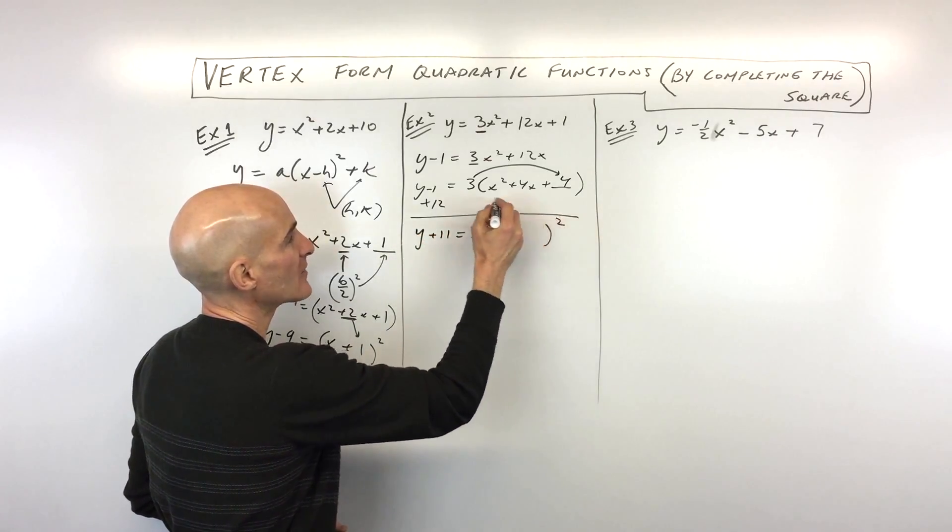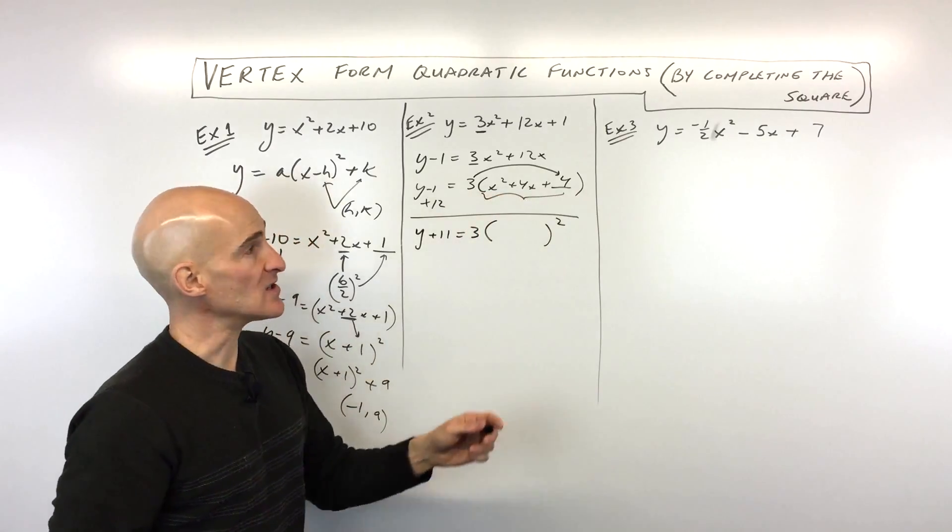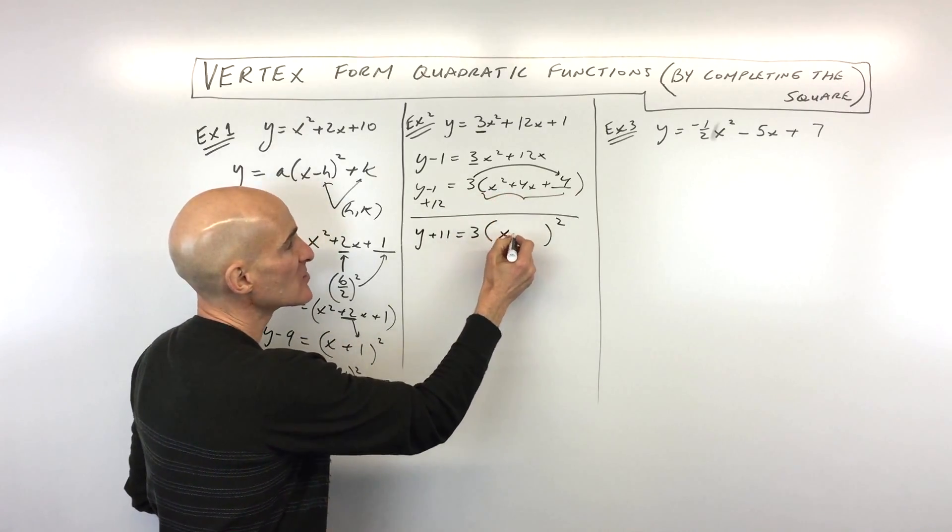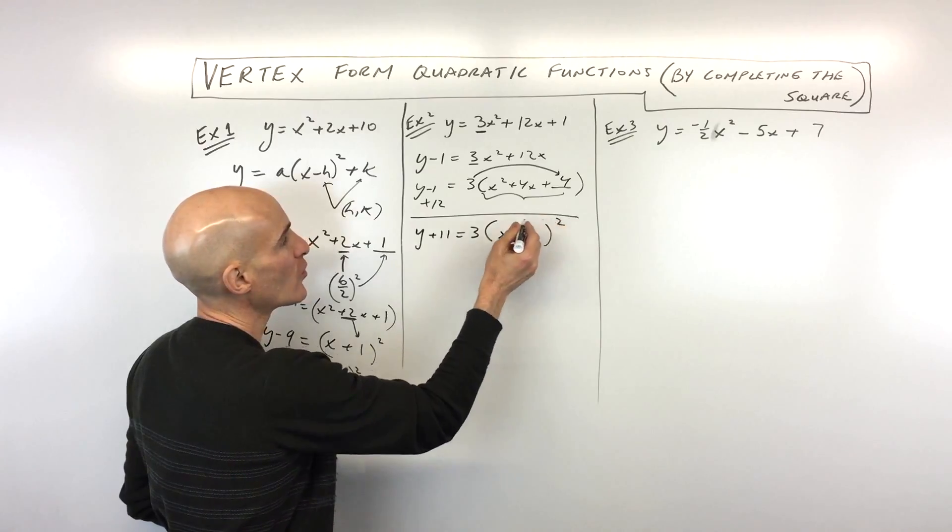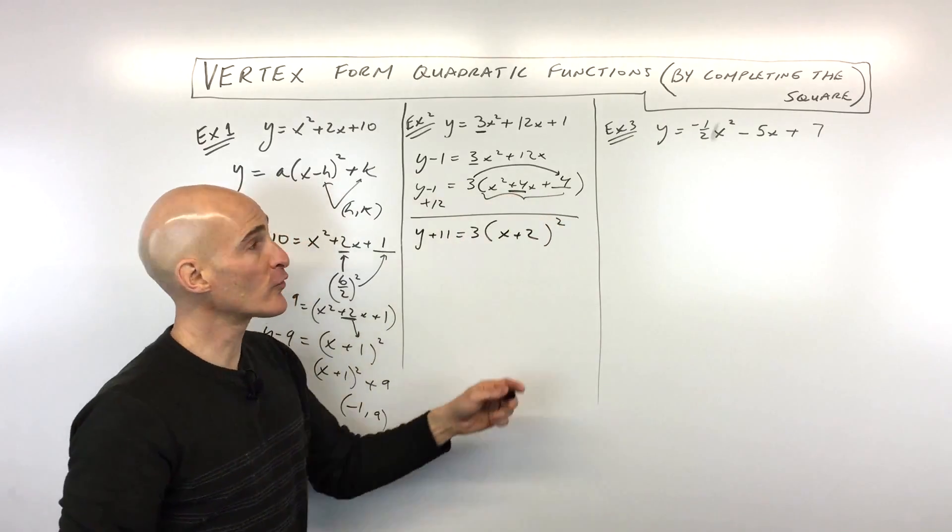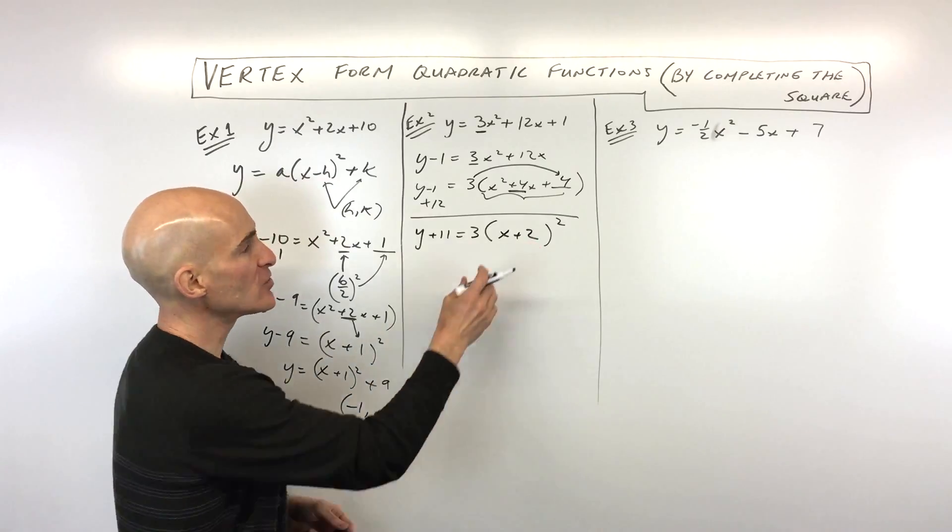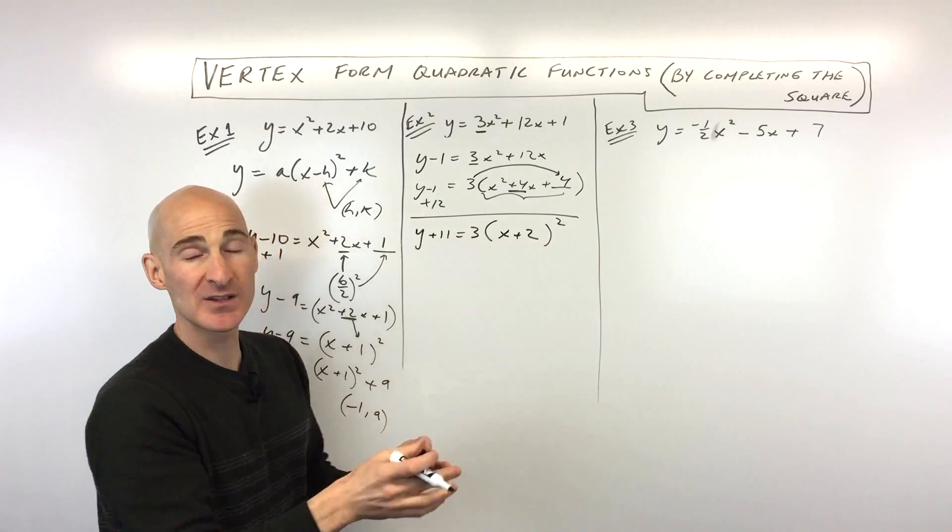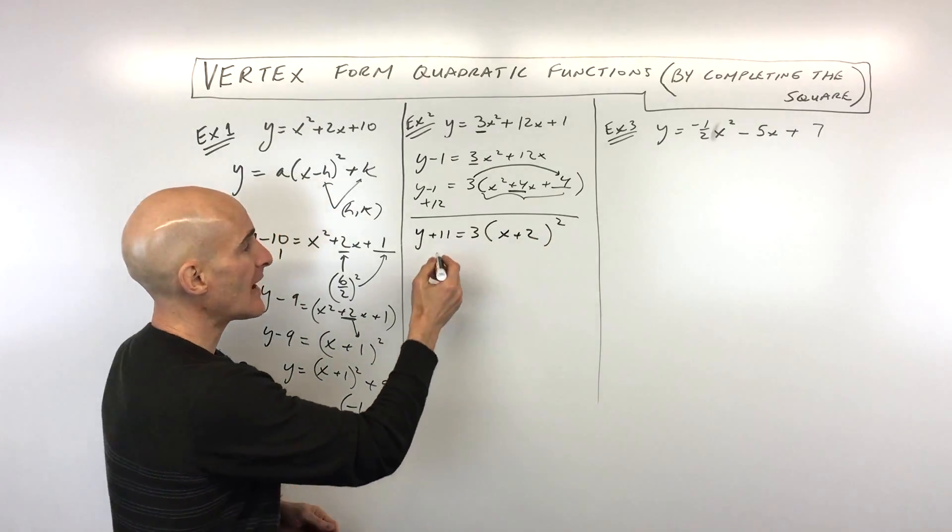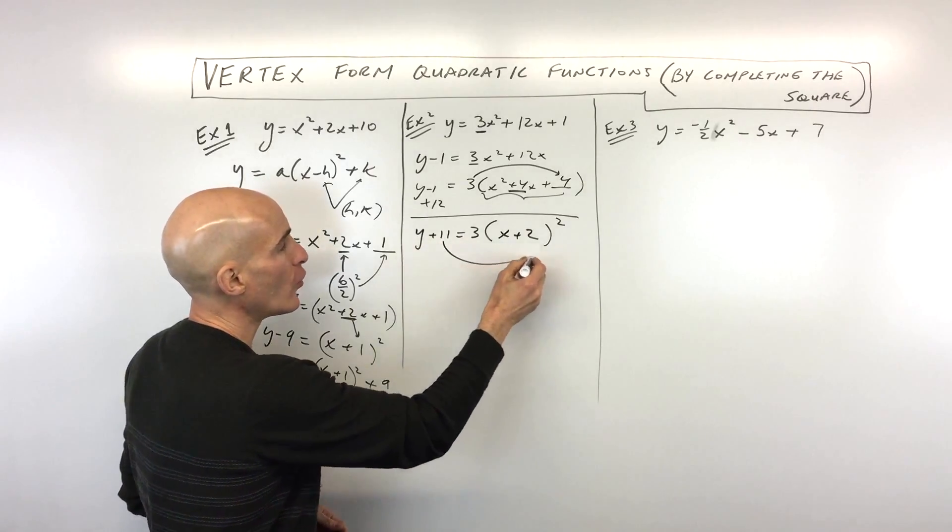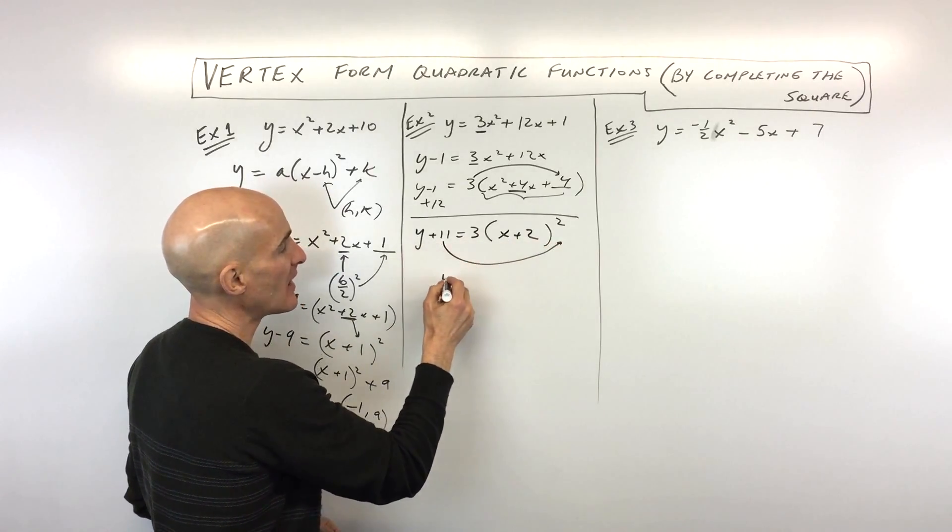And then now what we're going to do is we're going to factor this quantity in the parentheses. And remember how it factors, it factors as x plus 2, the quantity squared. It's going to be half of that middle coefficient. If this was minus 4x, then this would be minus 2, right? And you can double check this by foiling it out, x plus 2 times x plus 2. The last step is we just want to move this 11 over here to the other side by subtracting 11 from both sides.